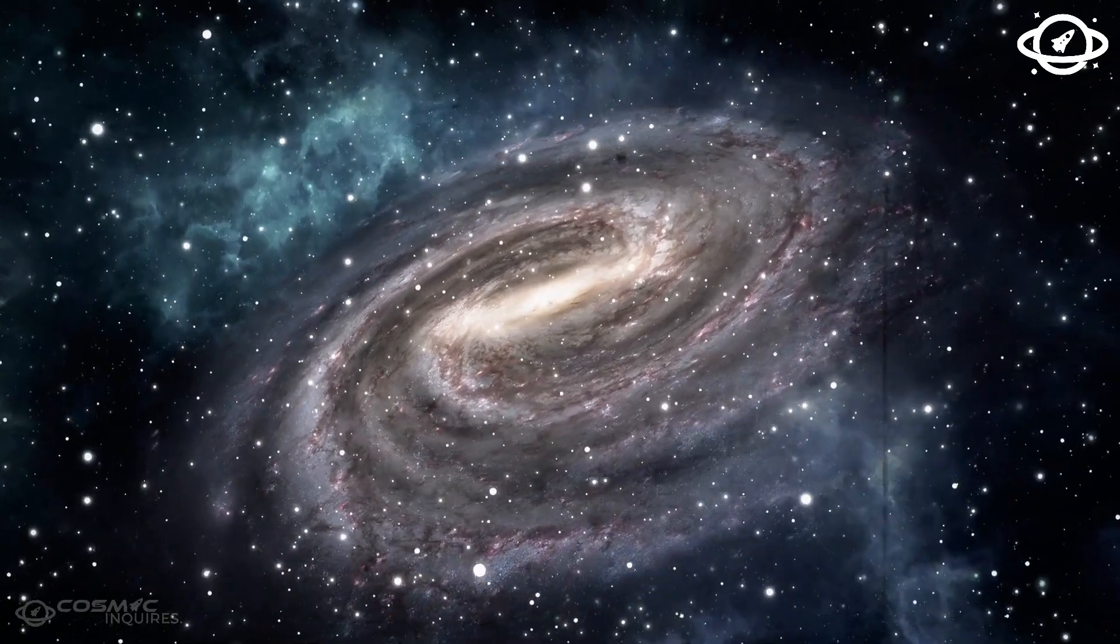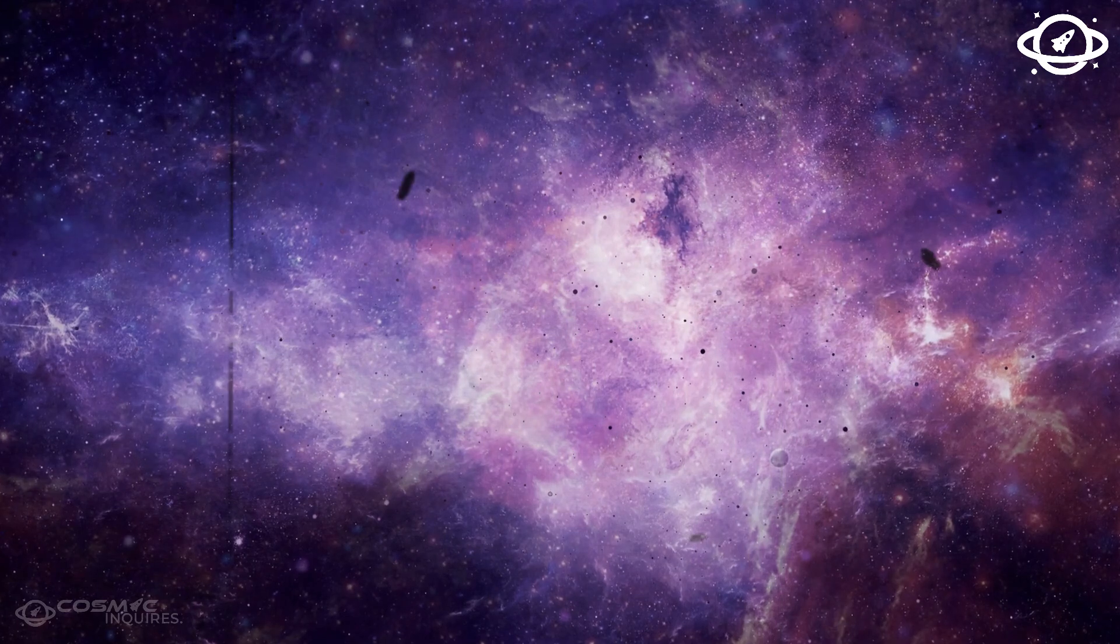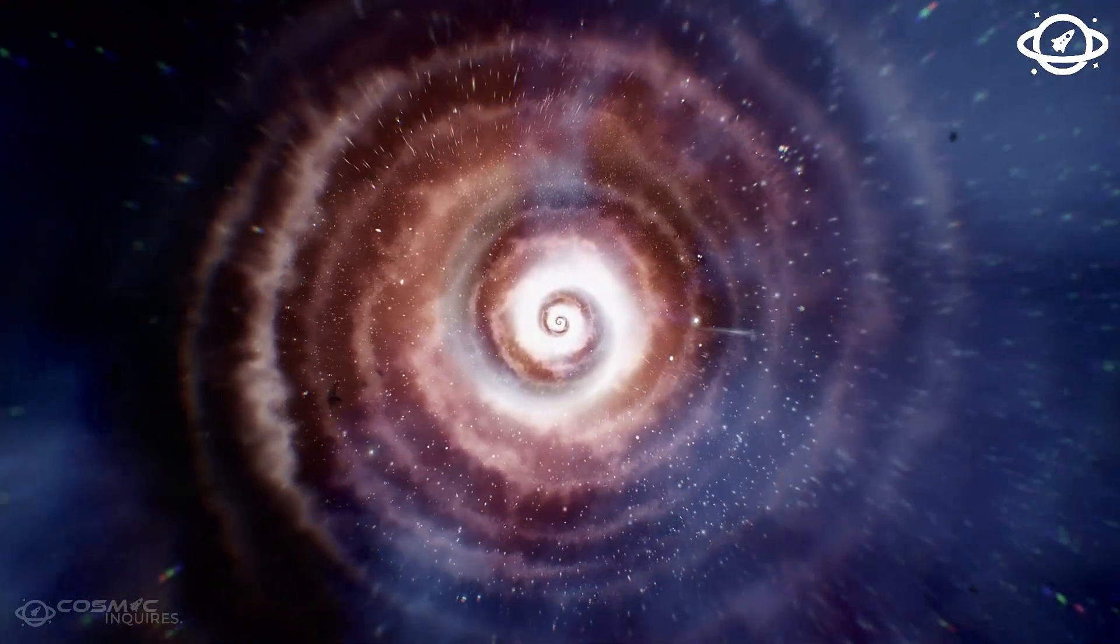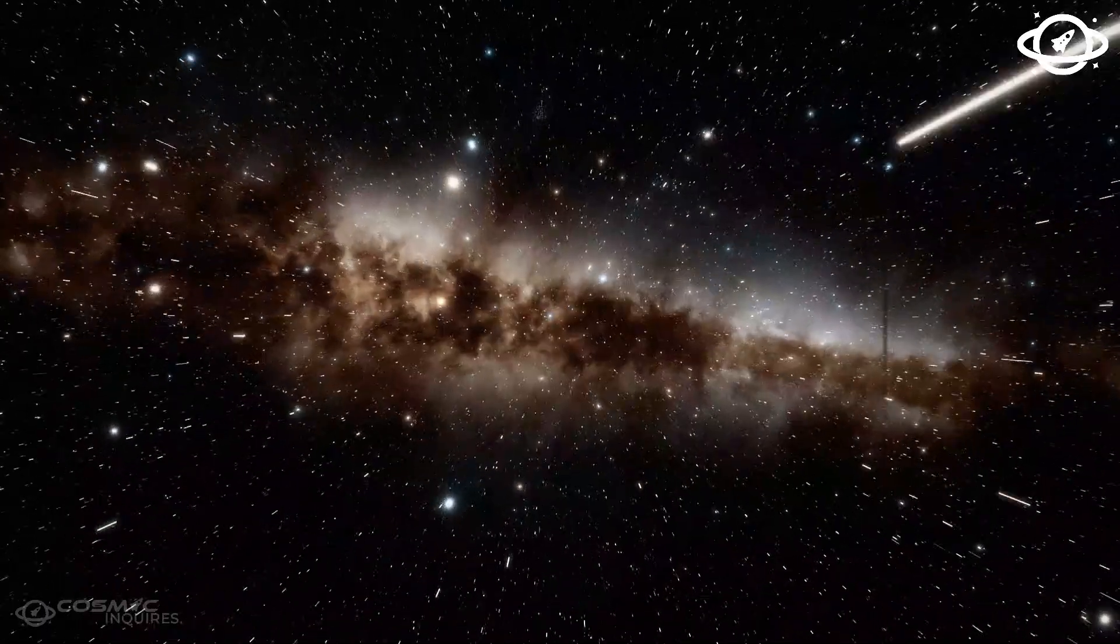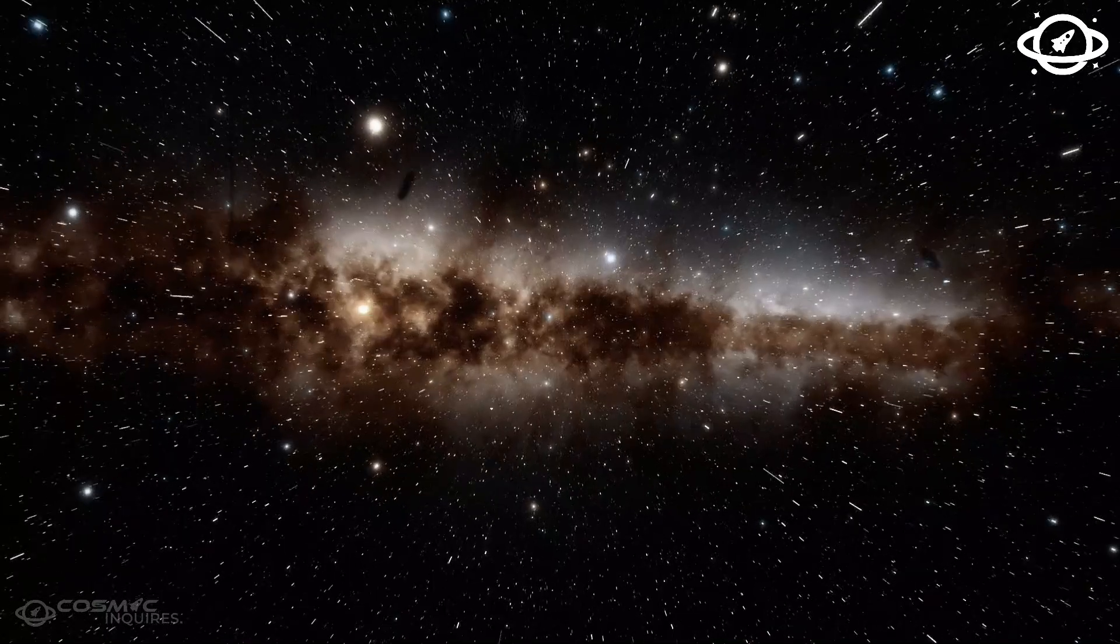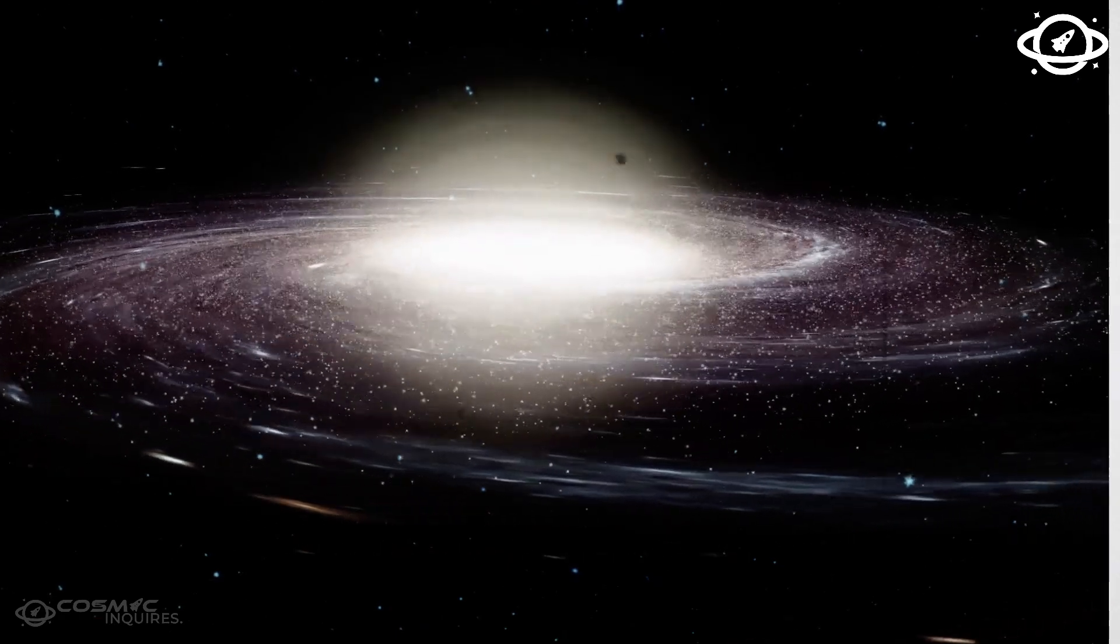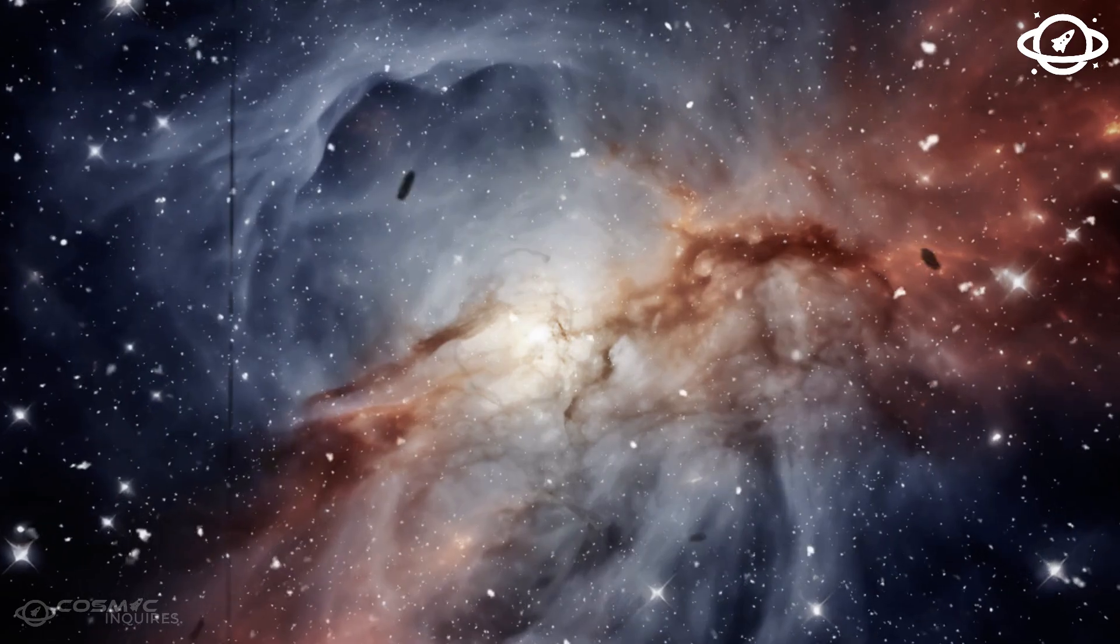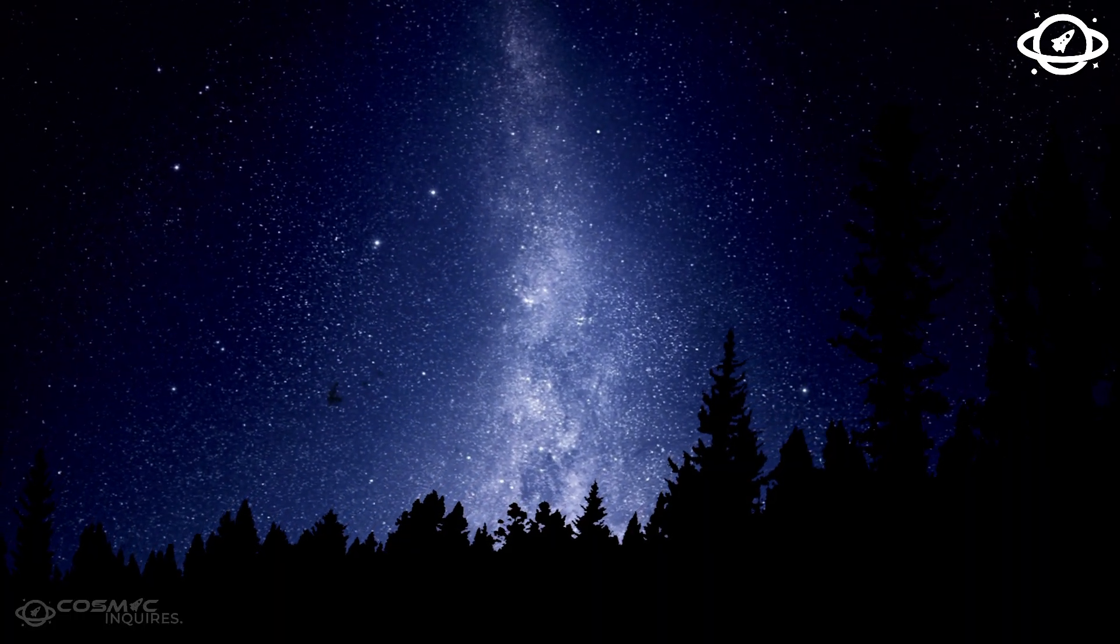For such an image to exist, the alignment between the two galaxies must be exact down to fractions of a degree across billions of light-years. That's not just rare, that's statistically improbable on a cosmic scale. While gravitational lensing is a known phenomenon, the degree of perfection here is raising far more questions than answers. Could this be a hint of some deeper symmetry embedded in spacetime itself, a sign that the universe isn't as chaotic as we've assumed, but instead governed by a geometry we've barely begun to perceive?